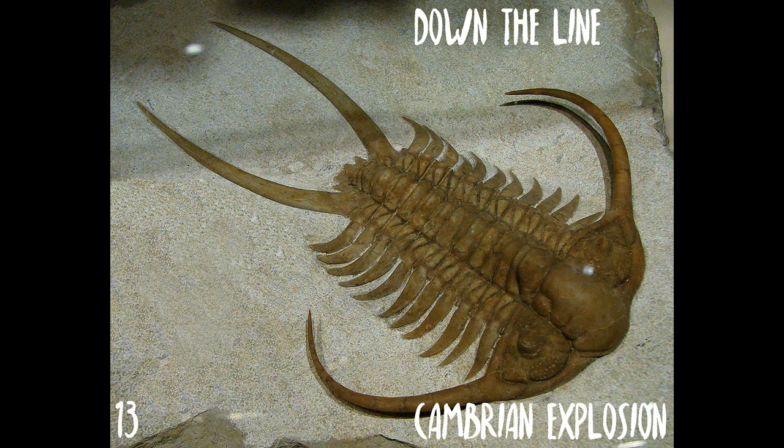The Cambrian lasted 55.6 million years, from the end of the preceding Ediacaran period 541 million years ago, to the beginning of the Ordovician period 485.4 million years ago. This period was established as the Cambrian series by Adam Sedgwick, who named it after Cambria, the Latinized form of Cymru, the Welsh name for Wales, where Britain's Cambrian rocks are best exposed. The Cambrian is unique in its unusually high proportion of sedimentary deposits, sites of exceptional preservation where soft parts of organisms are preserved as well as the more resilient shells.